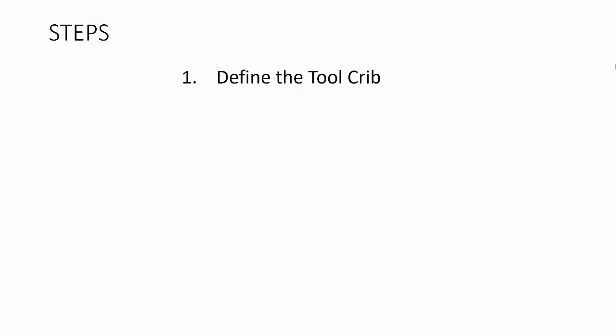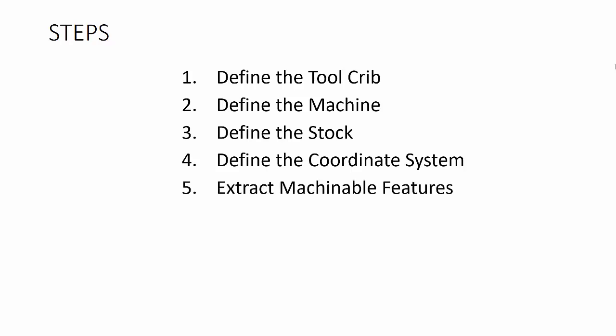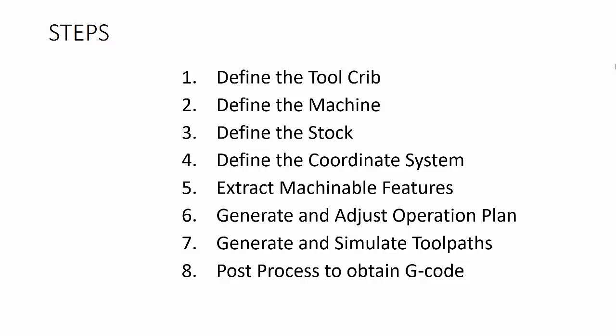Here are the steps in summary. First, you'll need to define the tool crib that you're using. Then we need to define the machine, and then define the stock. Then we need to define the coordinate system, then extract all the machinable features of the part. Once we've extracted the machinable features, we need to generate and adjust the operation plan. After that, we can generate and simulate the toolpaths. Once we've got the toolpaths figured out, we can post-process to obtain the G-code — a text file we can save to a USB drive and take to the CNC mill in the MakerLab.